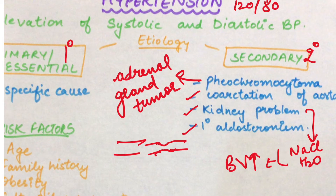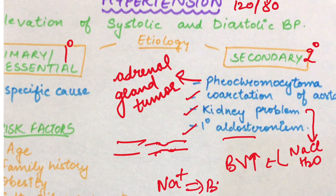Last secondary cause is primary aldosteronism. Aldosterone ka function hai ki woh kidney se sodium ki reabsorption karata hai. Agar sodium ki reabsorption zyada karayi gai toh eventually blood volume badh jayega, aur that is blood pressure badh na.